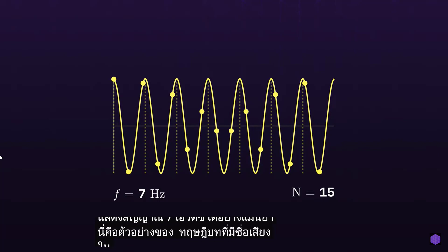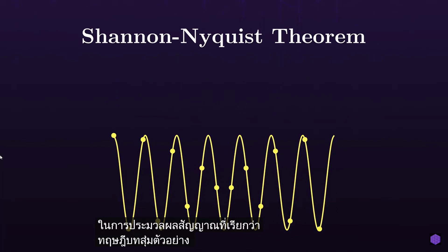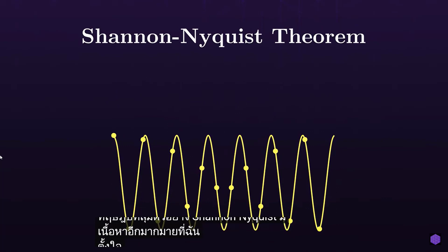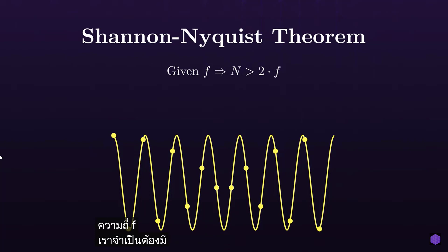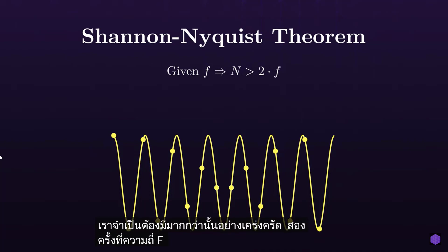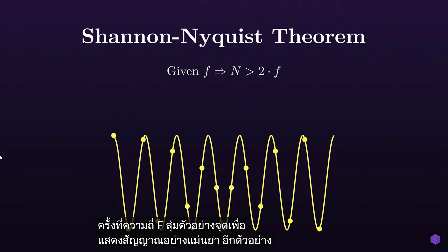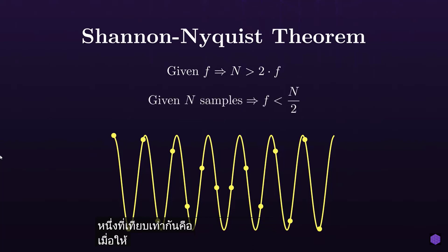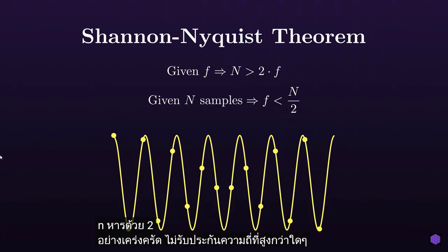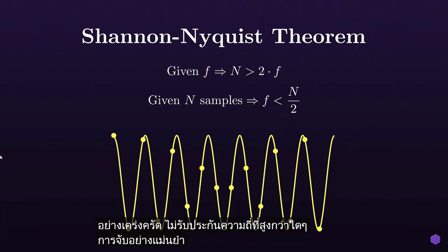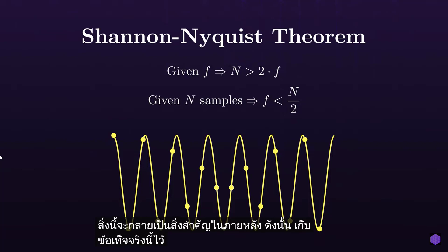This is an example of a quite famous theorem in signal processing called the Shannon-Nyquist sampling theorem. The important takeaway is that for any signal of frequency f, we need to strictly have more than 2 times that frequency f in sampled points to accurately represent the signal. Equivalently, given n samples of a signal, the highest possible frequency that could exist within the signal is strictly less than n divided by 2. Any higher frequencies are not guaranteed to be accurately captured — keep this fact in mind.